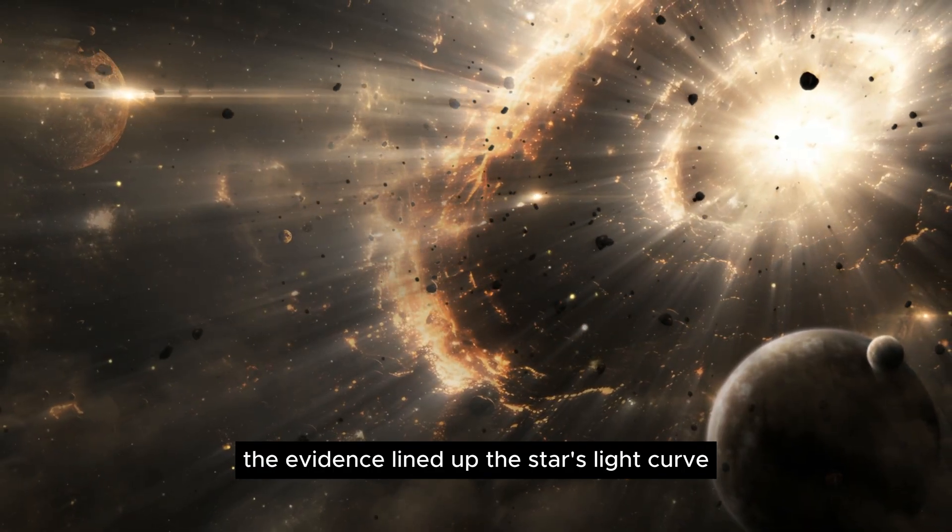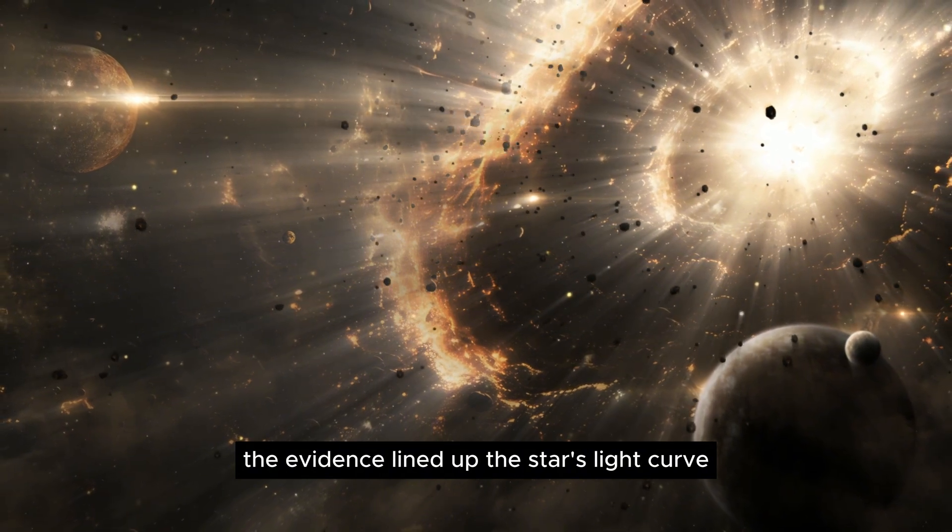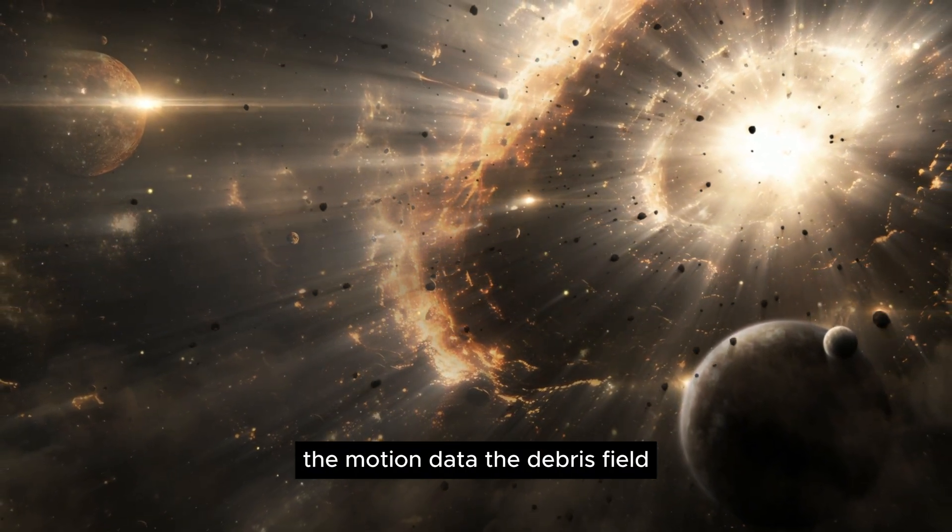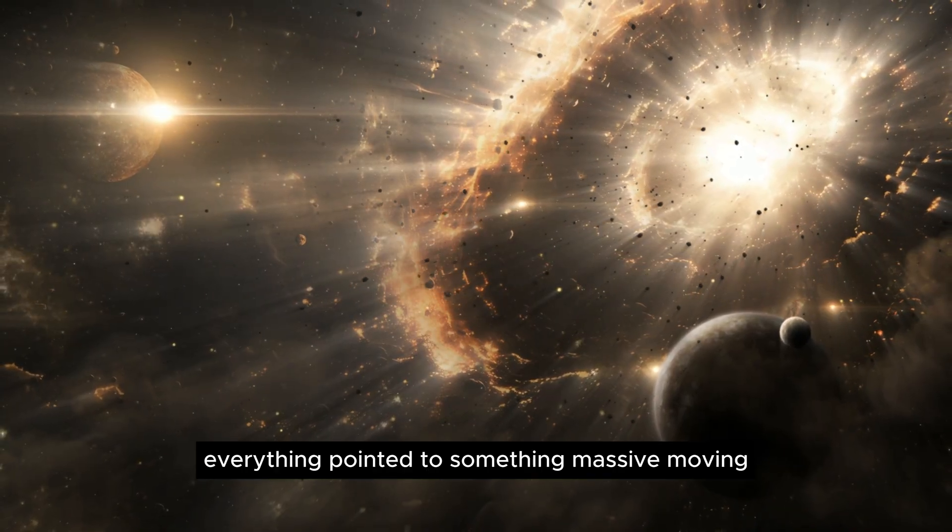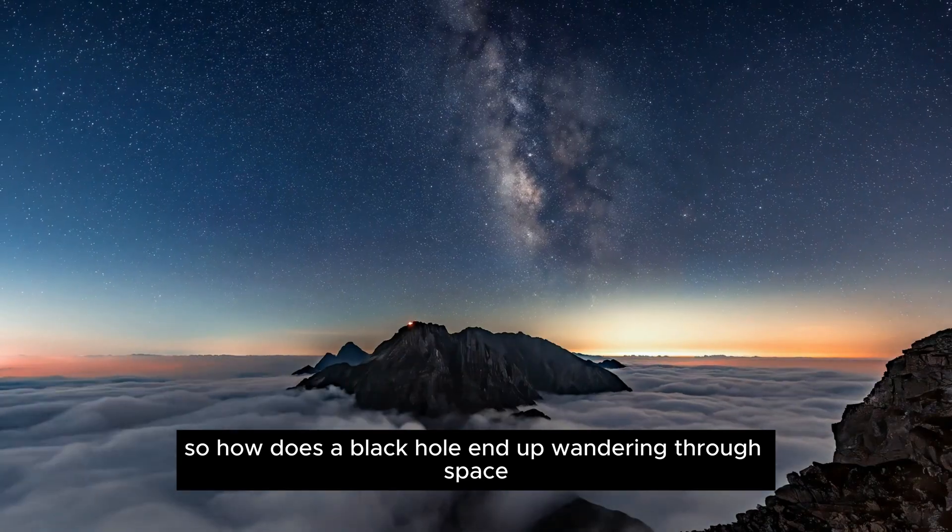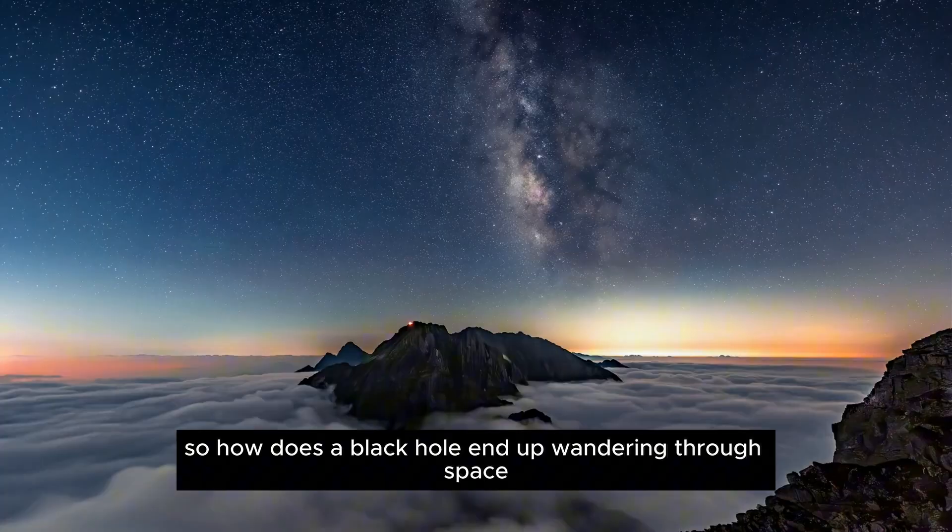The evidence lined up. The star's light curve, the motion data, the debris field. Everything pointed to something massive and moving. So, how does a black hole end up wandering through space?